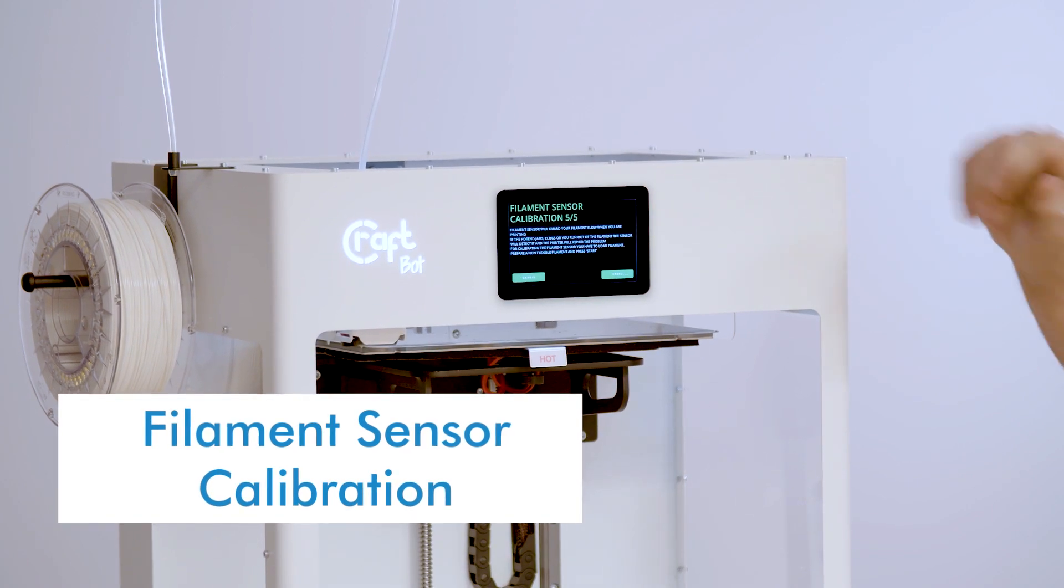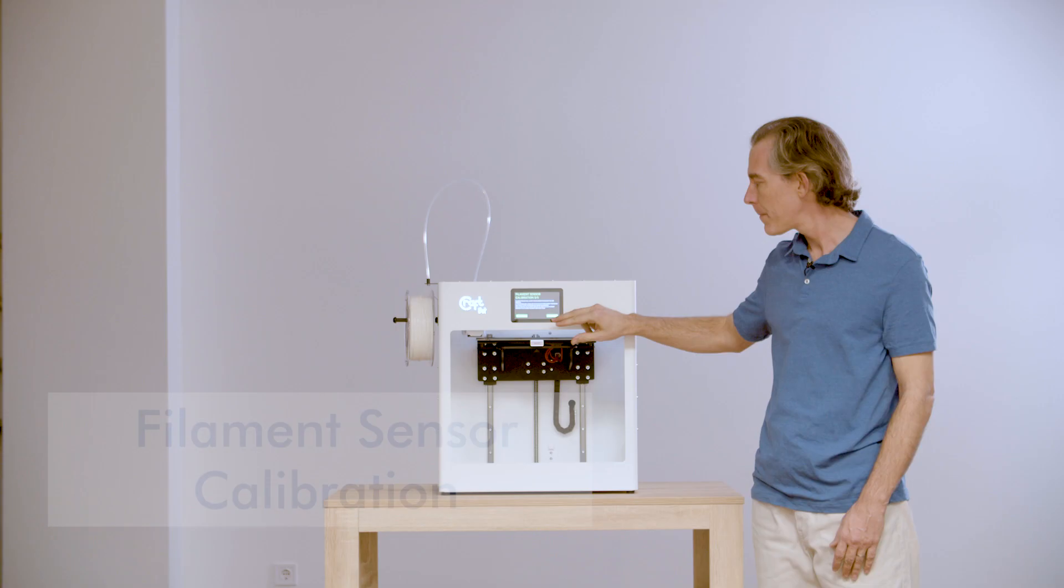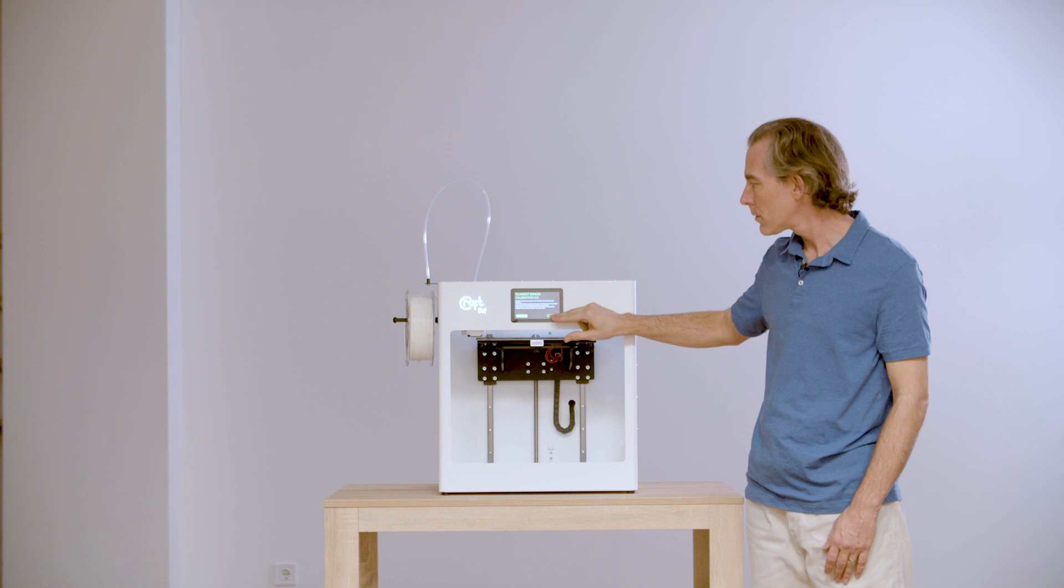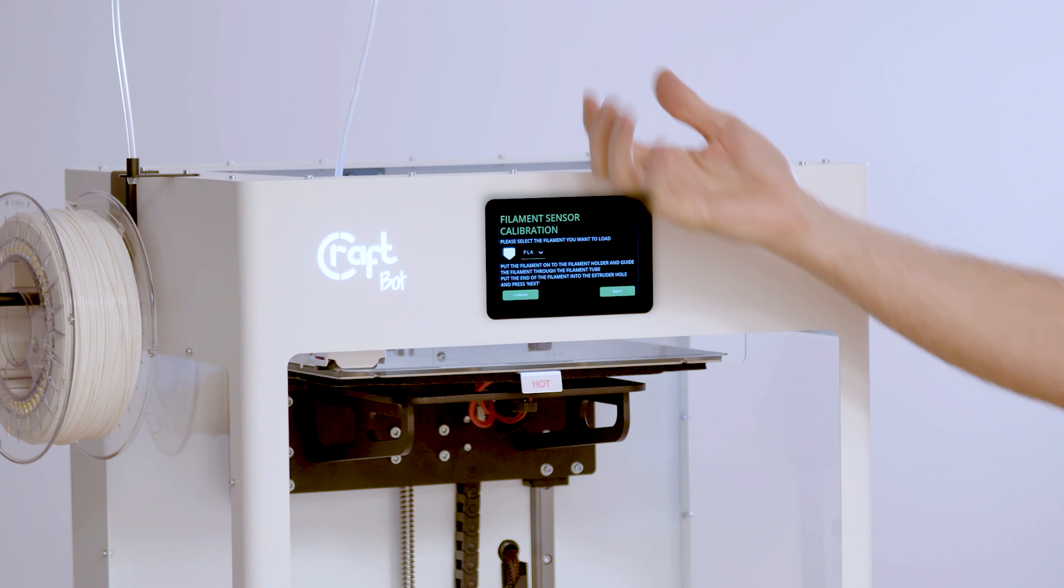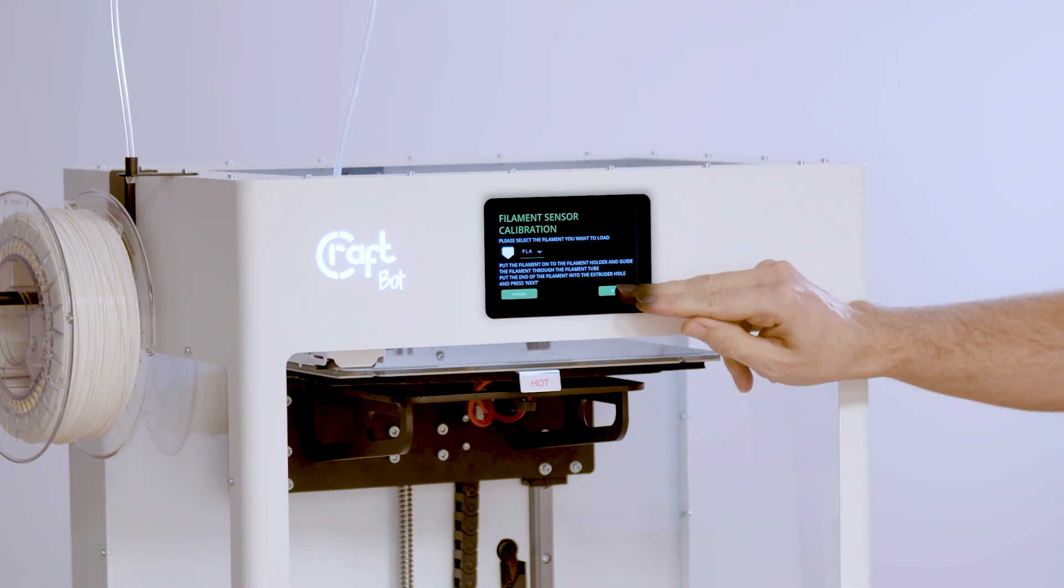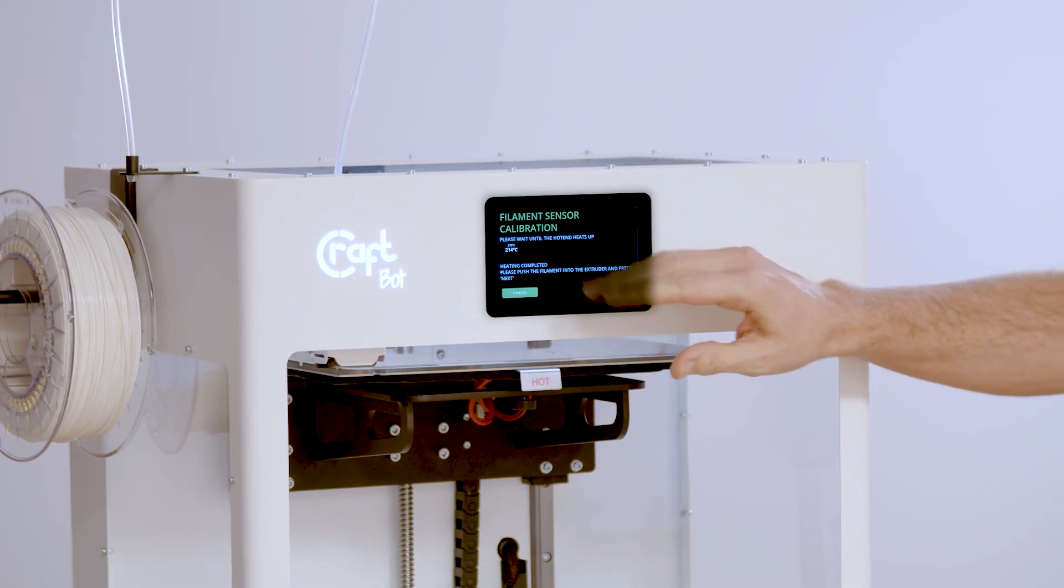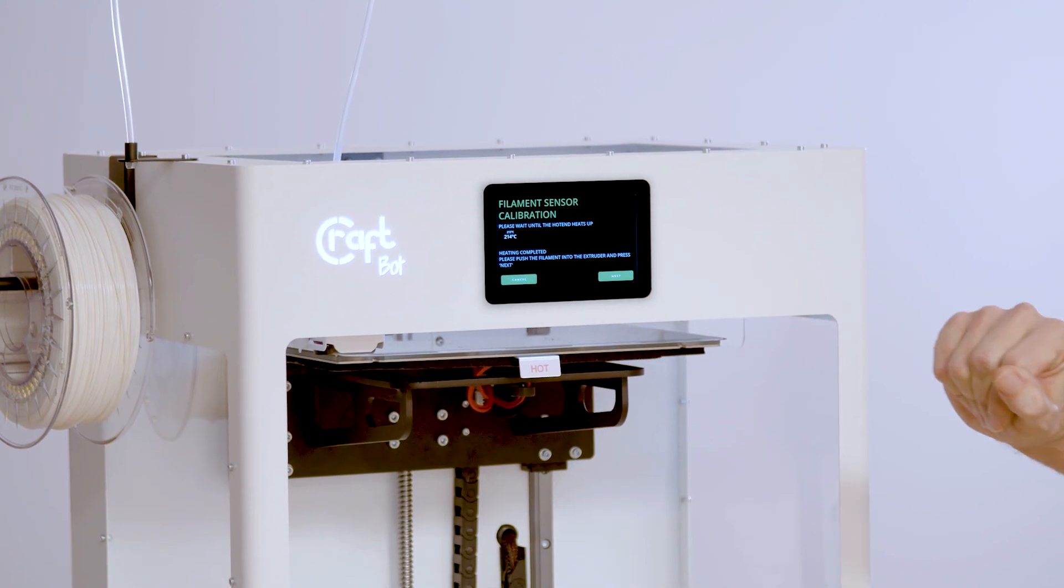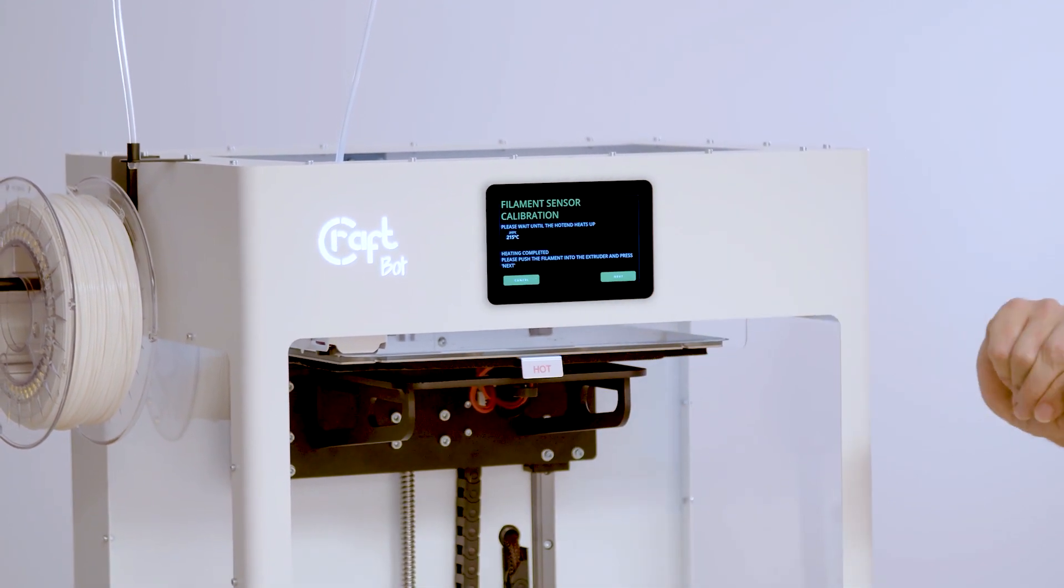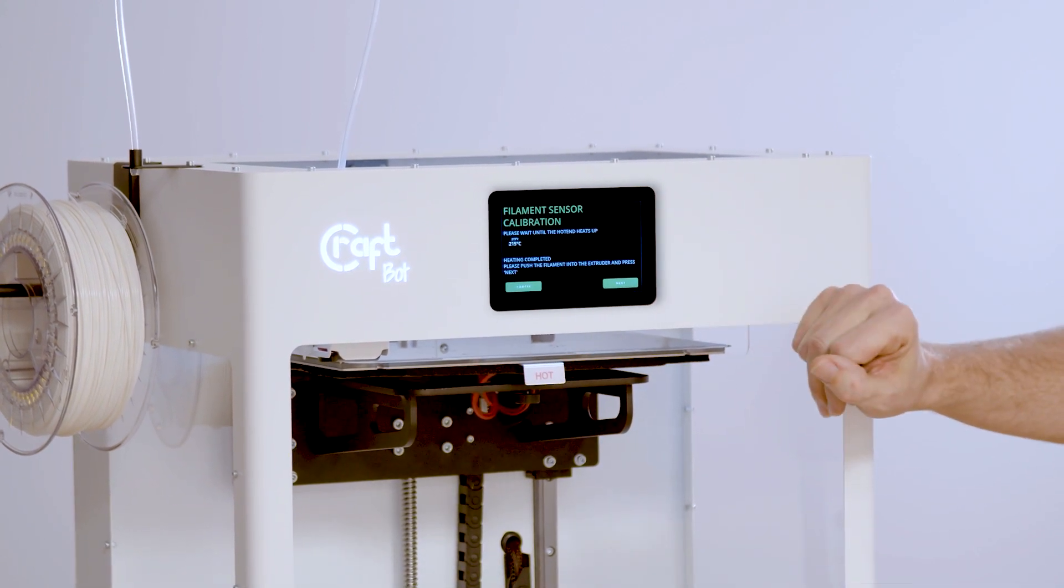And this is where we're going to calibrate the filament sensors. So it's going to prompt you to enter the type of filament that you want to load into the printer. Then it's going to go ahead and heat up, get to operating temperature. Once it's there, the next button will appear as you can see here and we're ready to move on.